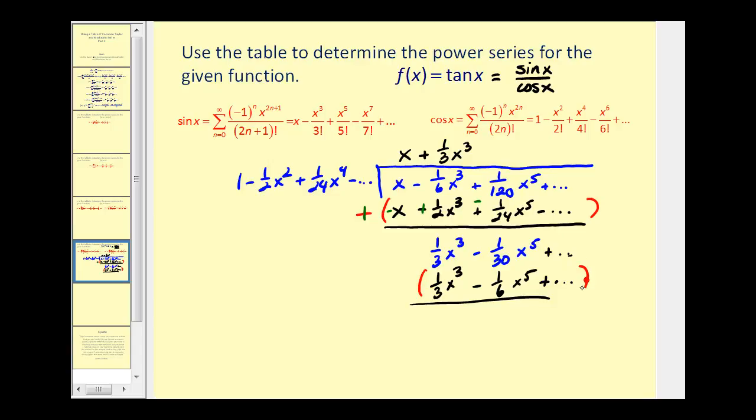So now we'll subtract this quantity. But instead of subtracting we'll add the opposites. So this will be a plus, this will be a negative, this will be plus. So this is zero. And we have negative one thirtieth x to the fifth plus one sixth x to the fifth. That will give us four thirtieths or two fifteenths x to the fifth.